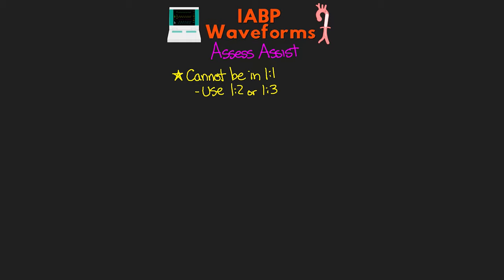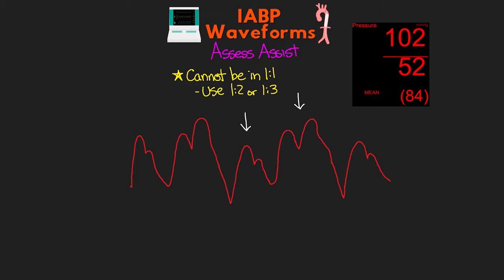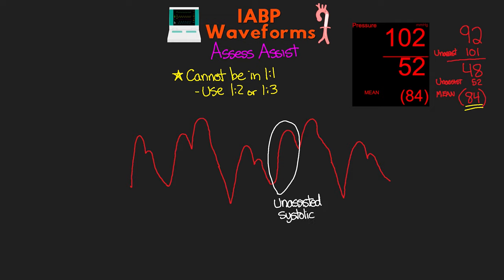In order to assess how well our balloon pump is assisting our patient, we can't have it in a 1-to-1 mode. We must have it in either a 1-to-2 or a 1-to-3 in order to compare our assisted and unassisted beats. This is usually the only time we'll have it in this mode when we're not weaning. Here's an example of a 1-to-2 arterial pressure waveform — you can now see an assisted versus an unassisted beat side by side. We can compare assisted and unassisted systolic as well as diastolic, though it's a little counterintuitive at first. The pressure values to the right of the arterial waveform will now show both assisted and unassisted pressures, while the mean stays as just one value. The unassisted systolic pressure: there was no balloon deflation prior to contraction, so there's no reduction in afterload and the peak systolic pressure achieved was fully the result of the strength of the heart.